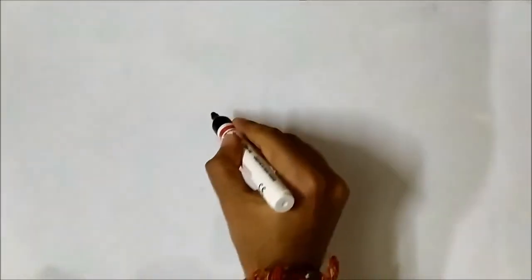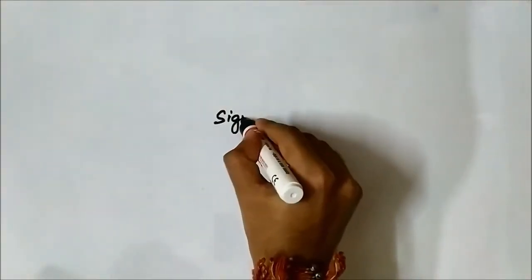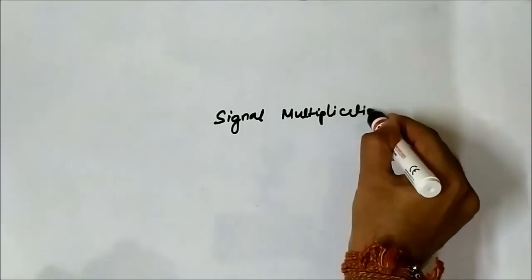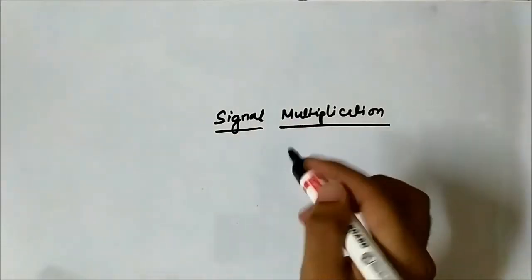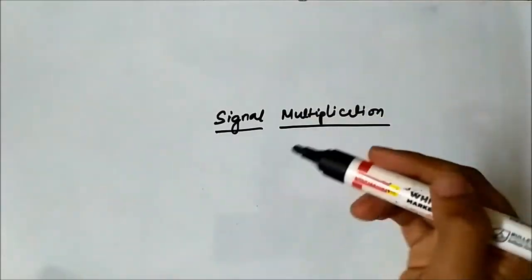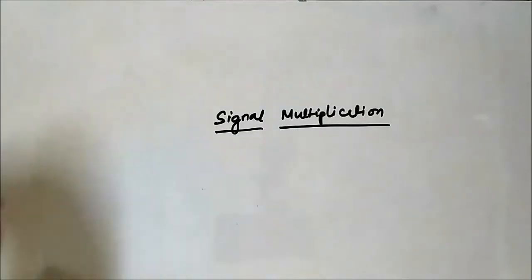Hello friends, welcome to engineering tutorial. We will continue our discussion with basic signal operations. Previously we discussed about signal addition, and in this video we are going to discuss about another basic signal operation which is signal multiplication. As the name suggests, we will multiply the amplitude values of the two signals at the respective time instance.